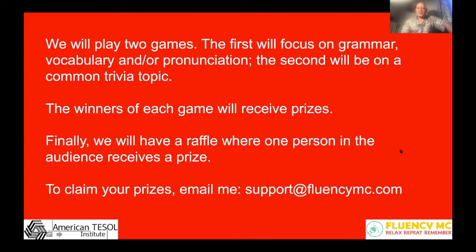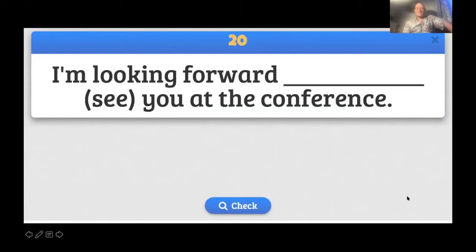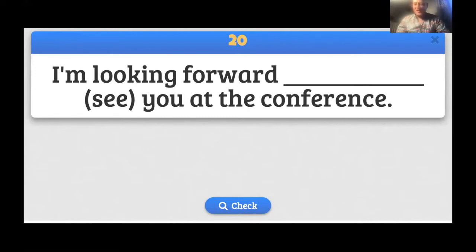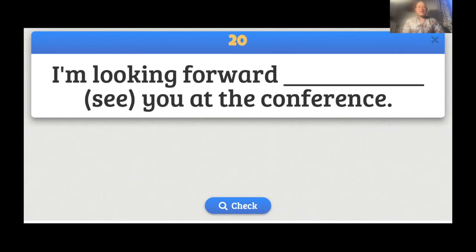Let's talk about how the game works. If it's a question where there is just one answer with no choices — for example, 'I'm looking forward at the conference, what would you say using the word see?' This is a grammar question — we're looking for a preposition. I do a lot of preposition games because it's the repetition with them that really helps, not the studying. So: look forward in, on, to, at, with, or for? And then what form of the verb? 'I look forward to seeing you' — so if this is your team, you would say: 'I'm looking forward to seeing you at the conference.'